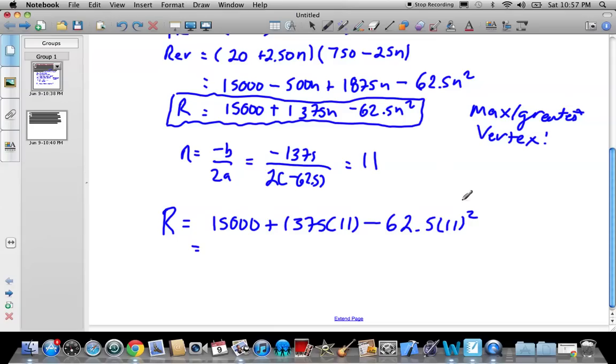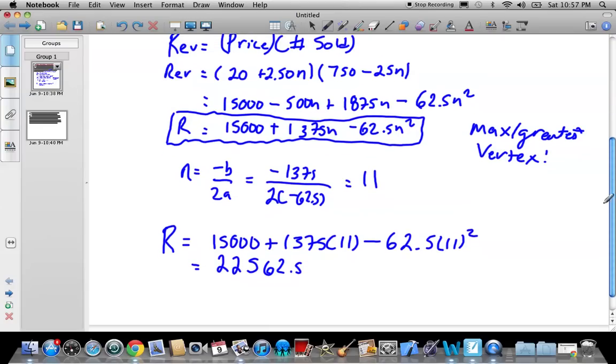11 squared times 62.5, 1,375 times 11. So looks like he's going to make $22,562.50 according to my calculations here. Yep, so that looks okay.